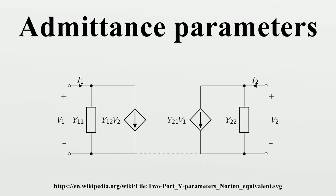Nor does it give any information about the voltage between terminals not belonging to the same port. Typically, it is intended that each external connection to the network is between the terminals of just one port, so that these limitations are appropriate. For a generic multiport network definition, it is assumed that each of the ports is allocated an integer n ranging from 1 to N, where N is the total number of ports. For port N, the associated Y-parameter definition is in terms of the port voltage and port current.